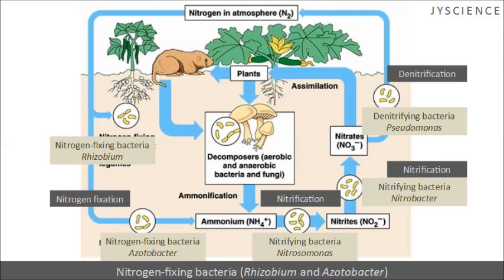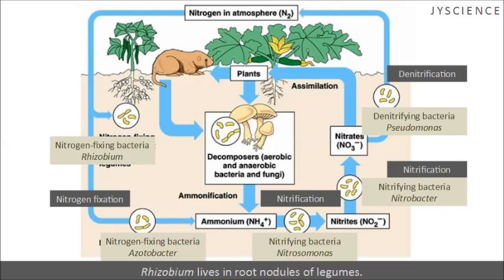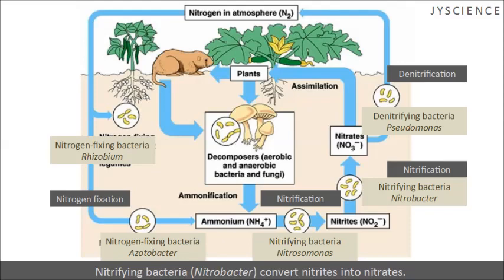Nitrogen fixing bacteria Rhizobium and Azotobacter convert atmospheric nitrogen into ammonium. Rhizobium lives in root nodules of legumes. Nitrifying bacteria Nitrosomonas convert ammonium into nitrites. Nitrifying bacteria Nitrobacter convert nitrites into nitrates. Denitrifying bacteria Pseudomonas convert nitrates into atmospheric nitrogen.